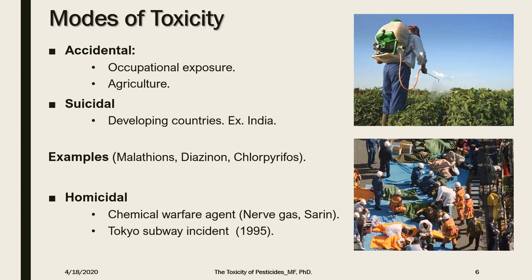Organophosphate poisoning occurs due to accidental exposure, mainly in agriculture and related occupations. Accidental toxicity commonly happens in children, as they have a very small surface area and organophosphate is rapidly absorbed through the skin and mucous membranes. Suicidal exposure is also very common in developing countries, for example in India, and homicidal exposure occurs through chemical warfare agents such as nerve gas.